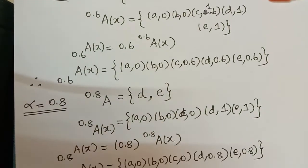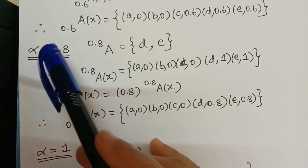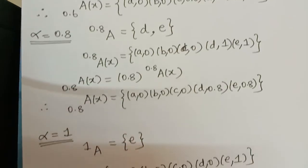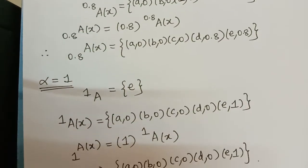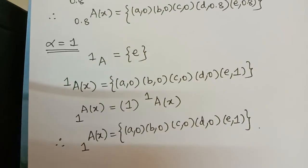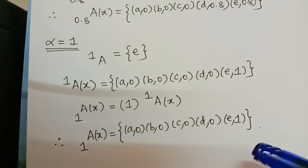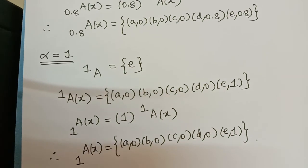In a similar way, we form the special fuzzy sets with respect to alpha = 0.8 and alpha = 1. This process is the decomposition of a fuzzy set. Hope you have understood this concept. Thank you.